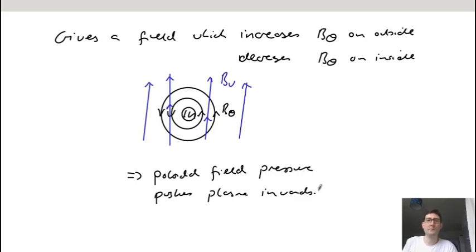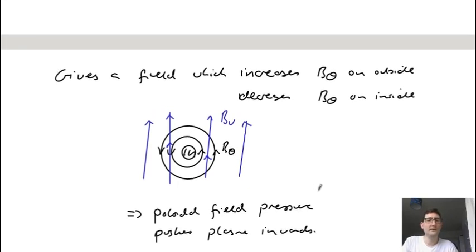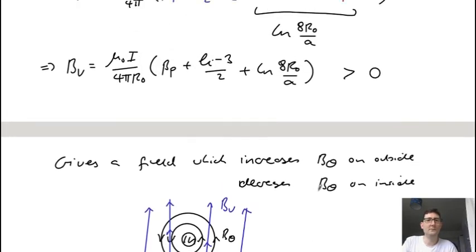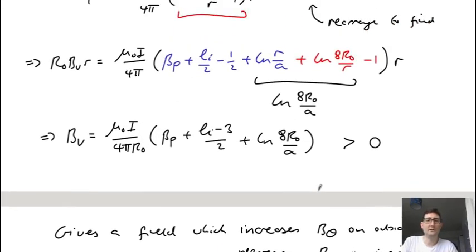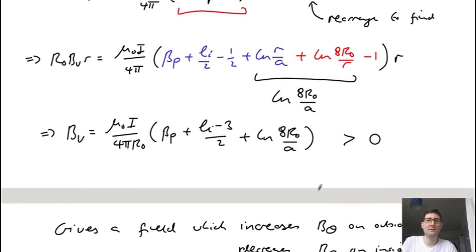Hopefully that was useful. This is quite a famous equation, widely used, first derived by Shafranov. It's valid in the large aspect ratio limit but is quite often used as a rule of thumb for working out how much vertical field you might need in a tokamak. Thank you.